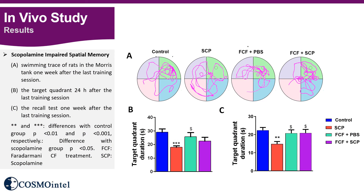The effect of scopolamine and PBS on animal performance at the probe stage is shown here. There was a significant difference between probe 1 and probe 2 between the control and scopolamine groups. There was no significant difference between the FCF-plus-PBS treatment group and the control in both probes. However, FCF treatment restored the memory of rats in the scopolamine-treated group in the second probe test compared to the control group.